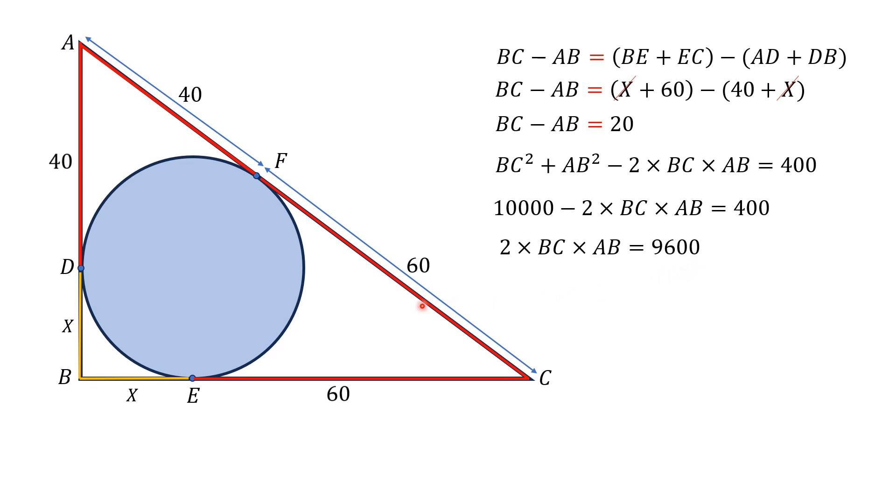Since we know that the area of a right triangle is equal to half times base into altitude, I need BC multiplied by AB divided by 2. To get this relation, we will divide by 4 on both sides and we will get half times AB times BC equals 2400 square units, which is the required answer.